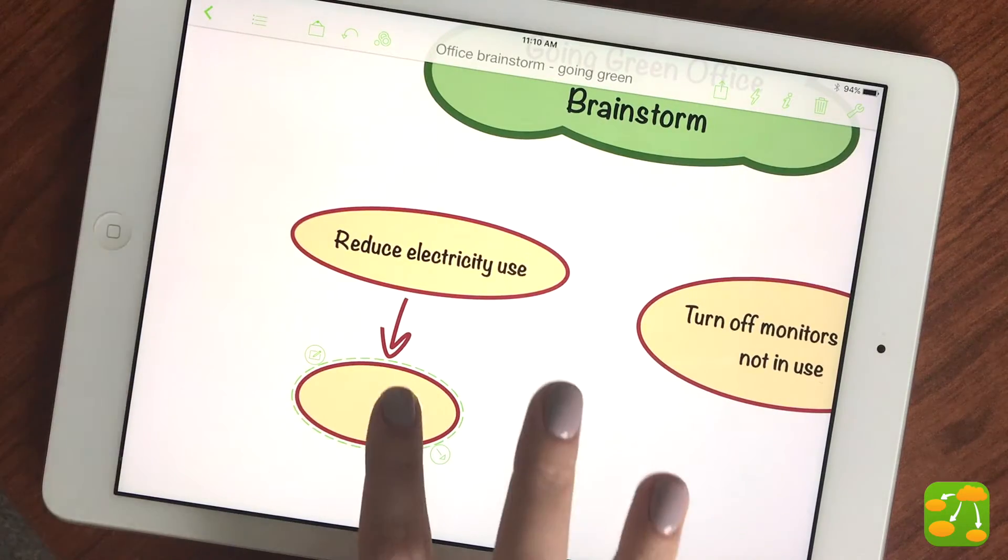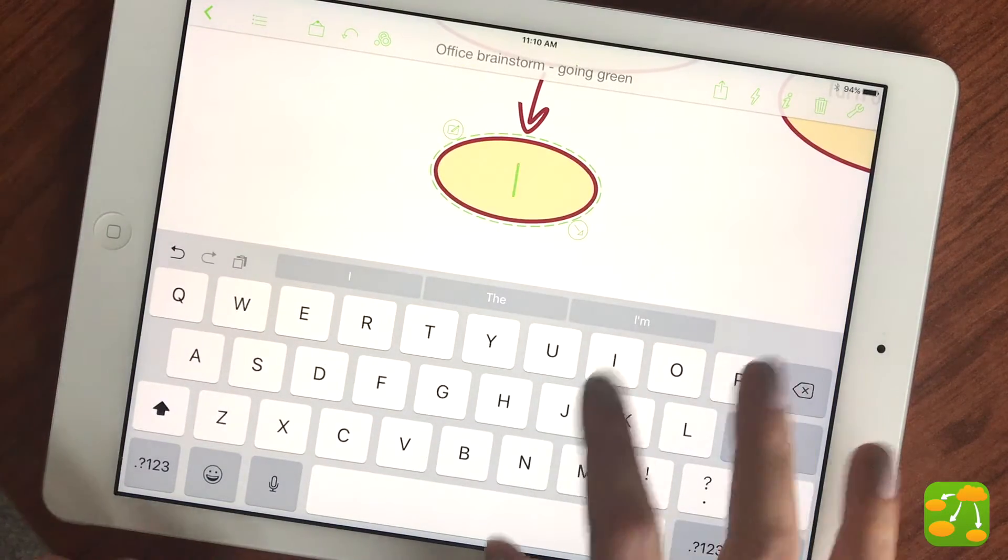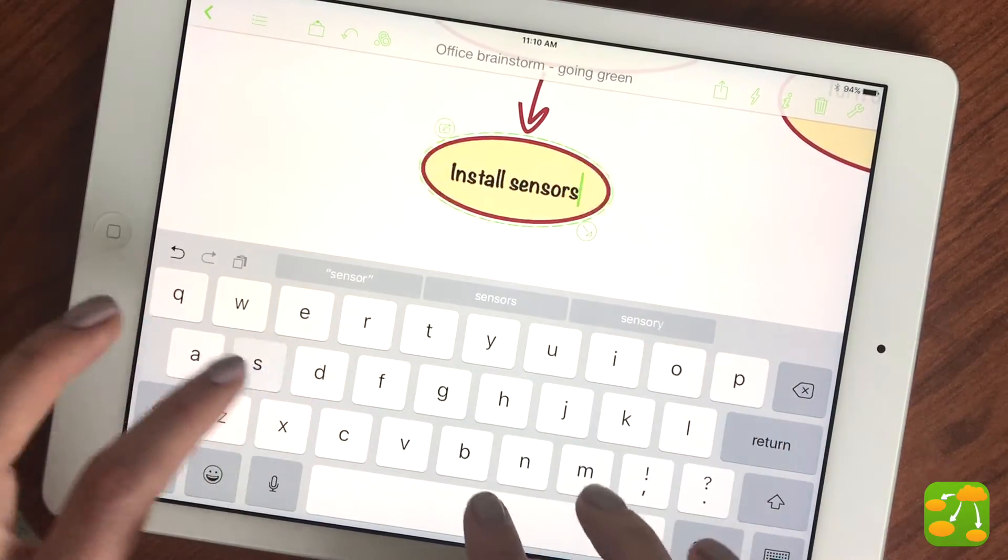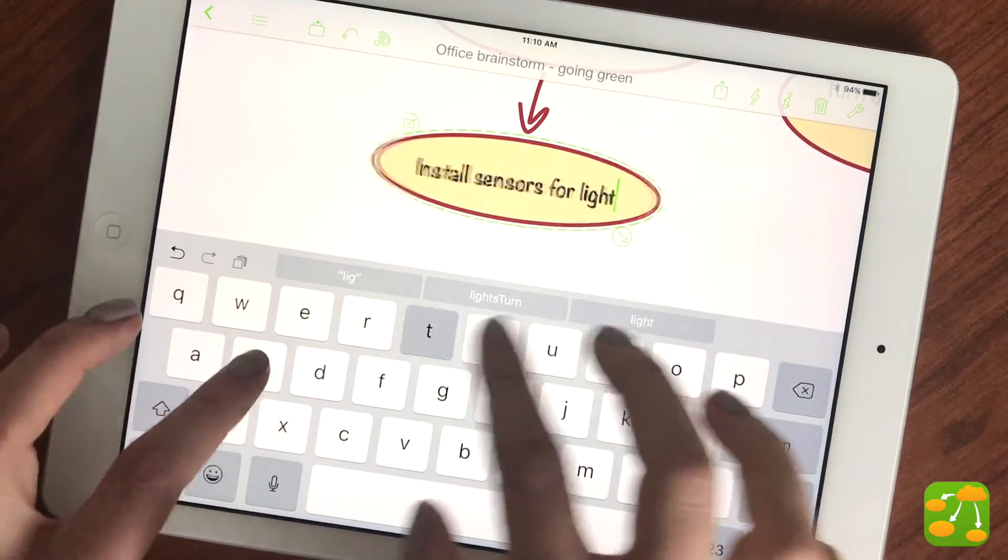We call these connections between symbols links. As you make connections between ideas, use links to show relationships and demonstrate comprehension.